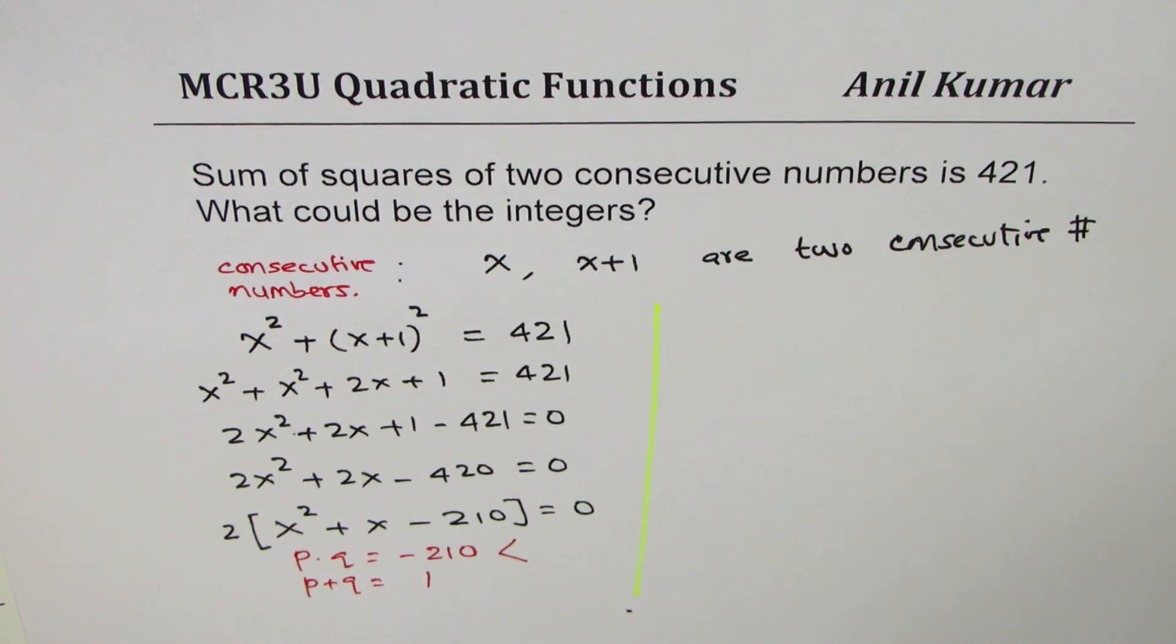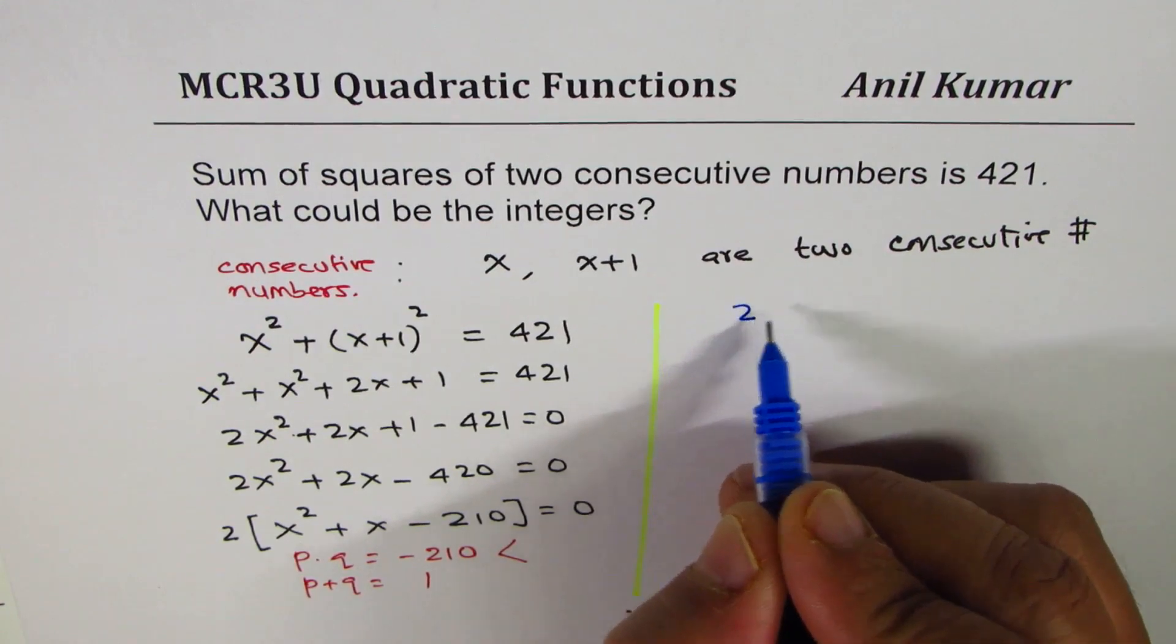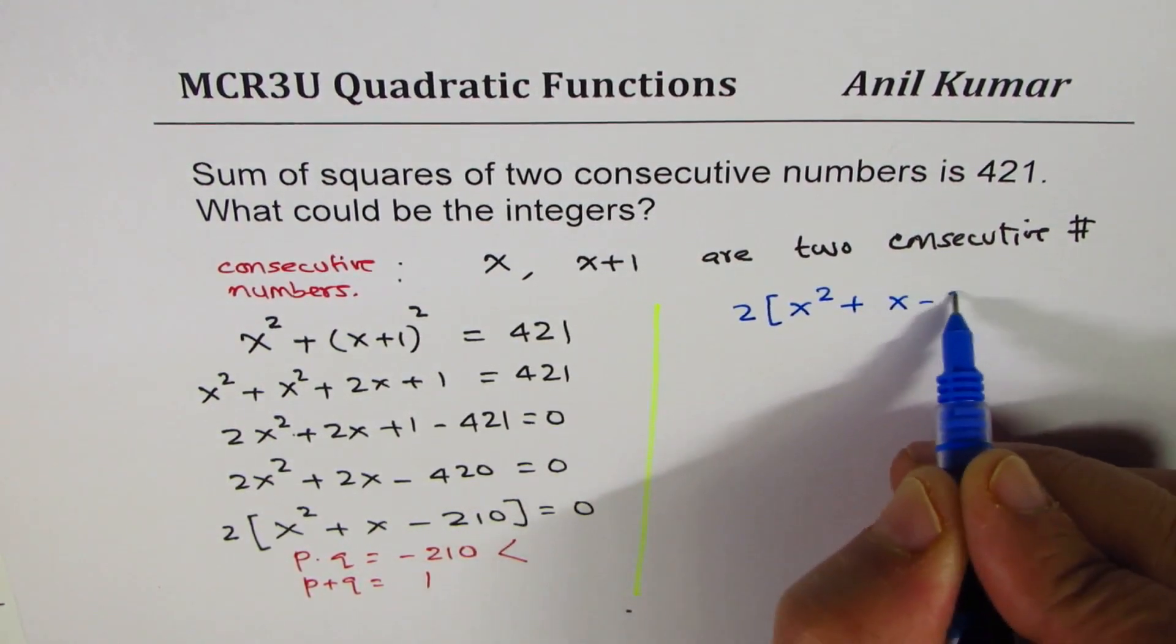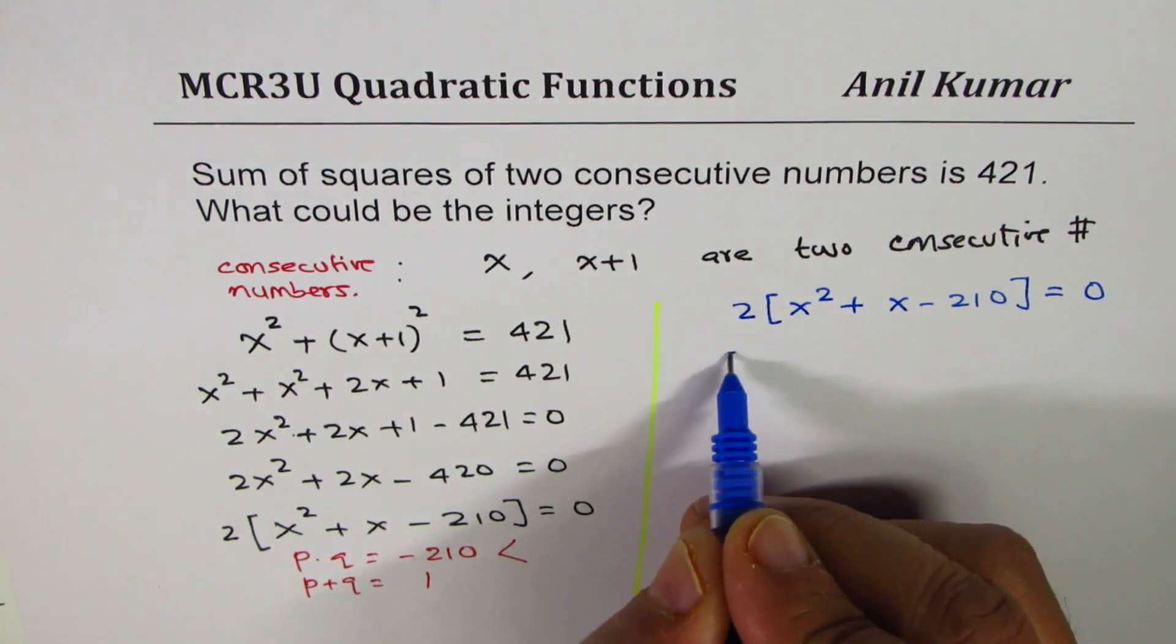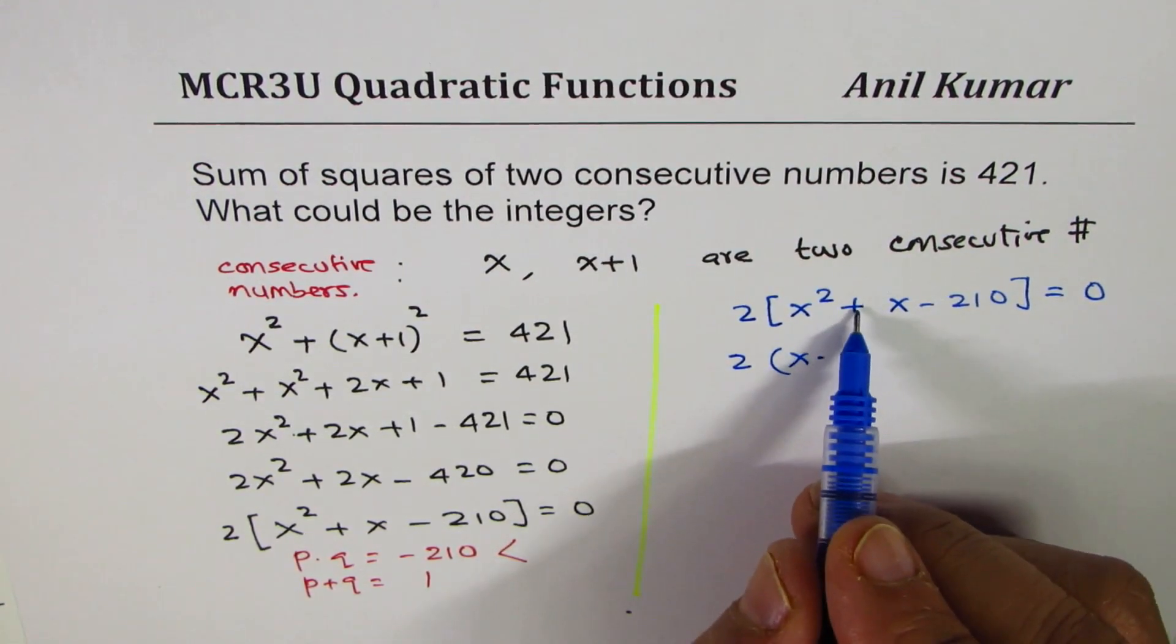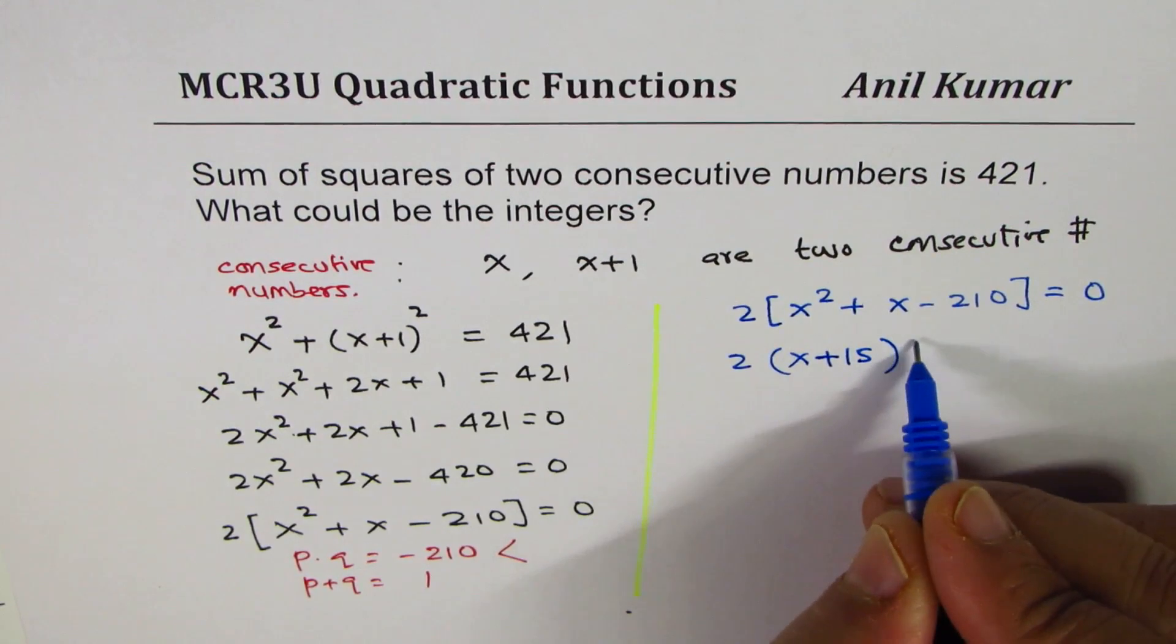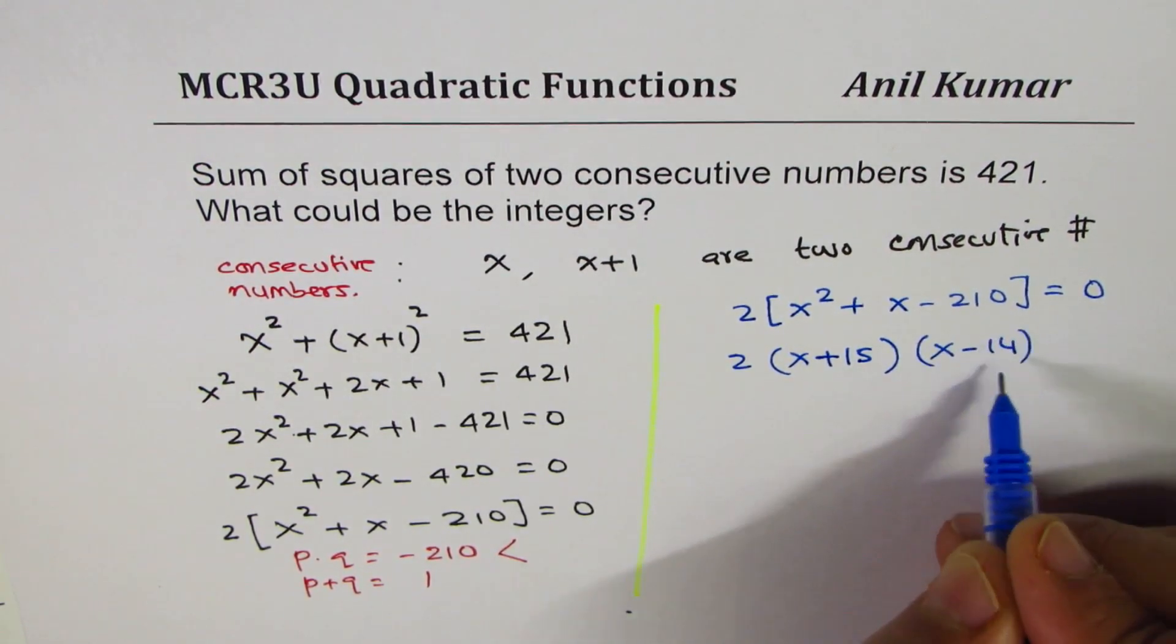So let me rewrite this equation here which is 2 times (x² + x - 210) equals to 0. And we will factor this as: x, since this is positive, bigger number is positive - bigger number is 15 for us, right? And the smaller number was 14 negative.